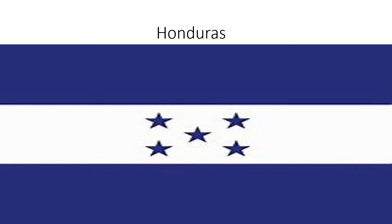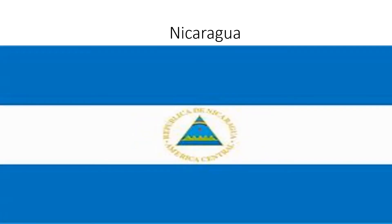Honduras: blue, white, and blue above each other, and five blue stars in the middle. Nicaragua: light blue and white and light blue above each other, and in the middle there is a mountain that has a yellow circle surrounding it.